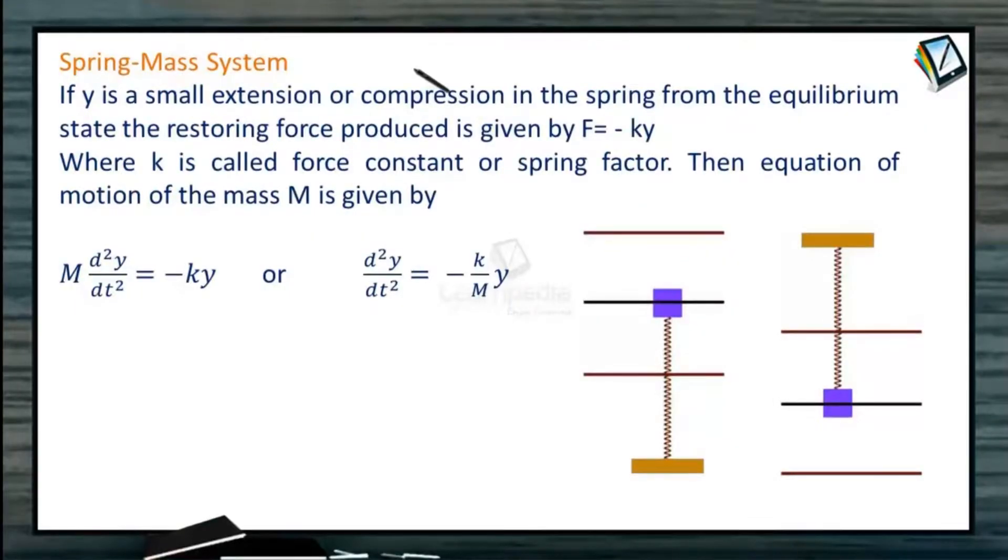Let us study about spring mass system. You can see here that there is one spring connected in vertical orientation and there is a block connected at the end of the spring. Suppose the spring is in its natural length, and at this point if we slowly release it, then it will start performing oscillation.